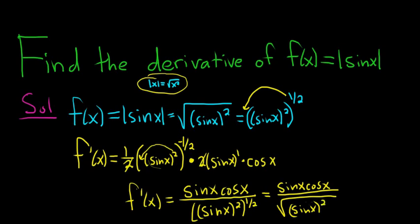But we know something about this bottom piece, right? The square root of sine squared is the absolute value of sine x. So this is sine x cosine x over the absolute value of sine x. So this bottom piece is the same as this. And that's it. I hope that made sense.